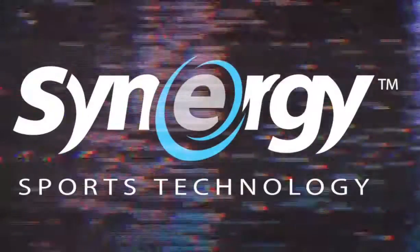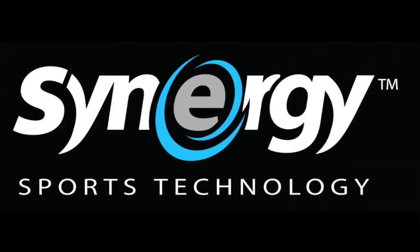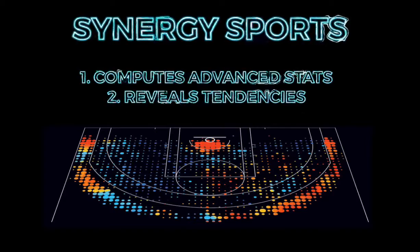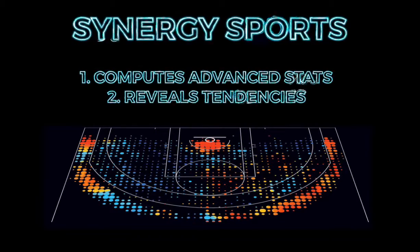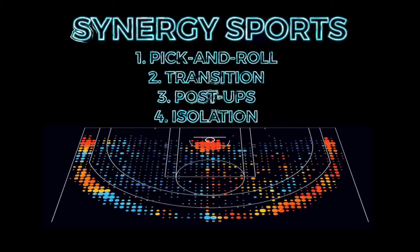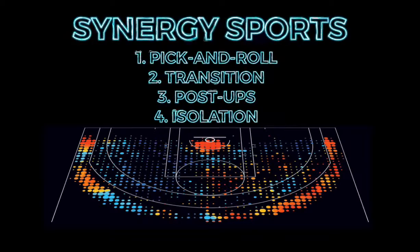During games, we use a much more advanced type of technology called Synergy Sports, a basketball analytics service that computes advanced statistics and reveals team and player tendencies throughout the course of a game and season. Examples of this include how frequently a team or player scores off of pick and rolls, in transition, on post-ups, and in isolation.